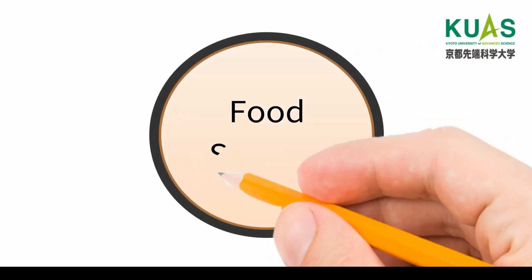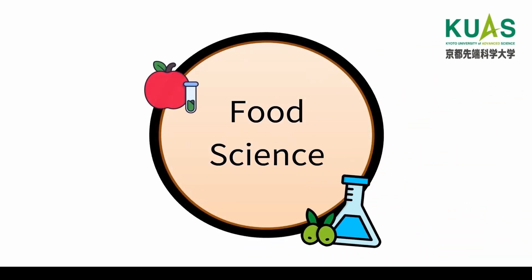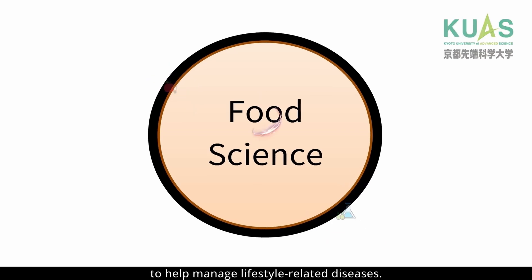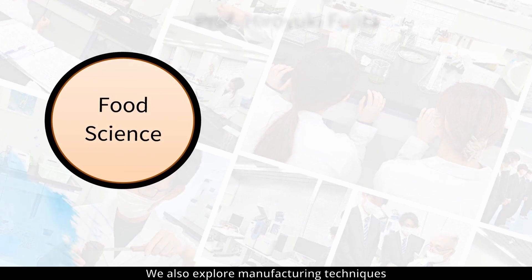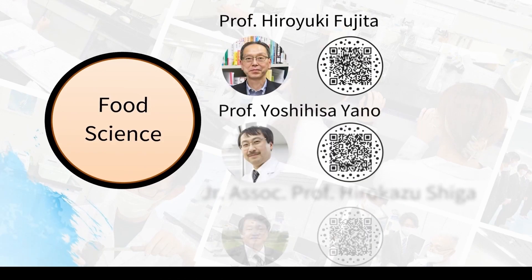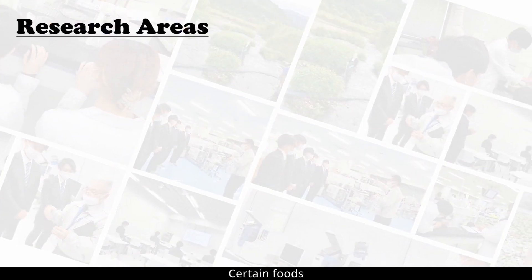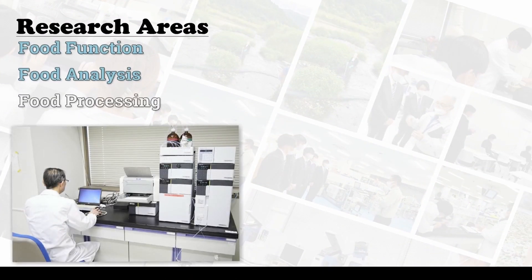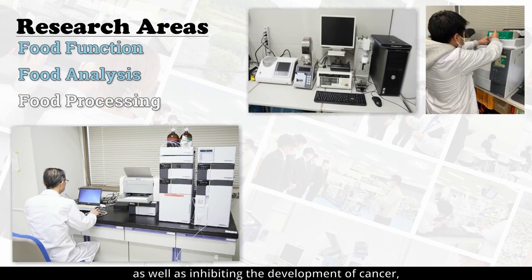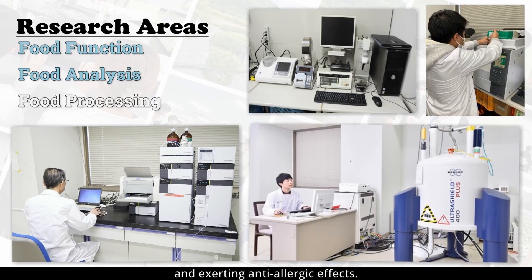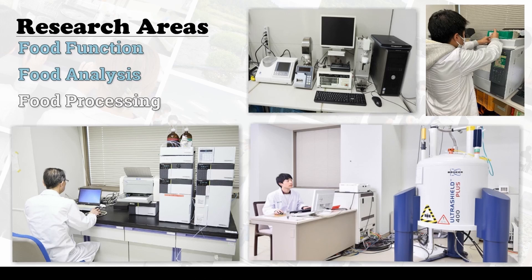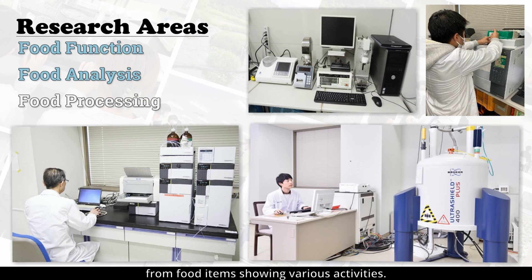Foods have functions beyond mere nutrition; they also regulate the body's condition. Our research delves into these functions to help manage lifestyle-related diseases. We also explore manufacturing techniques for dried foods to improve their shelf life and make them more palatable. Certain foods demonstrate biological regulatory functions, such as preventing diabetes and high blood pressure, as well as inhibiting the development of cancer and exerting anti-allergic effects. Therefore, we screen foodstuffs, primarily those from Kyoto Prefecture, for such effects using various in vitro activity measurement systems. Furthermore, we conduct in vivo animal studies, isolating and determining the structure of components that exhibit these functions from food items showing various activities.